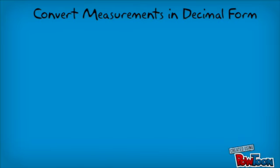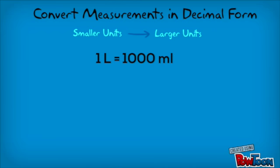We are going to convert measurements in decimal form from smaller units to larger units. We know that 1 liter equals 1000 milliliters.